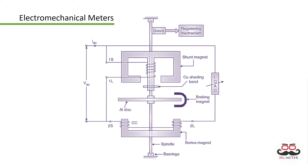The spinning of the disk moves the dials that indicate total electricity consumed in kilowatt hours. A utility worker must visit, read, and record the current readings for you to be billed. You can also read the meter yourself to determine how much electricity you have consumed and confirm that utility charges are accurate.